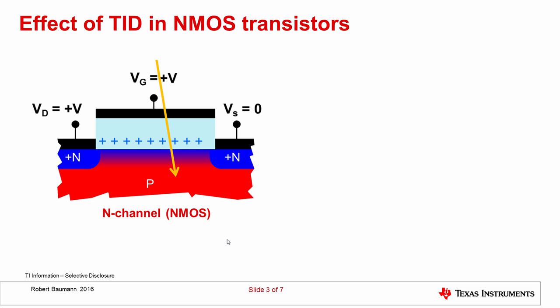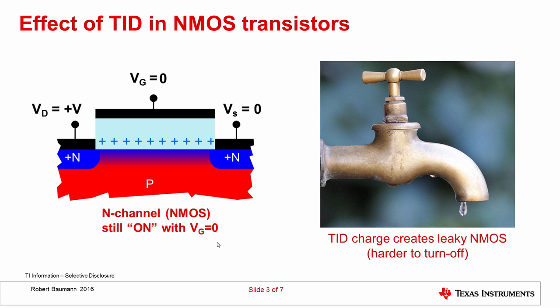The effect of these trapped holes is to attract more electrons, acting like an applied positive gate voltage. In very bad cases, where a tremendous amount of charge has been generated, you can turn off the gate voltage and the channel remains — the N-channel is still on even though the gate is off. This is a very leaky transistor. Total ionizing dose effectively creates a leaky NMOS transistor: it becomes harder and harder to turn off as dose exposure increases, and eventually you reach a condition where the transistor no longer functions.